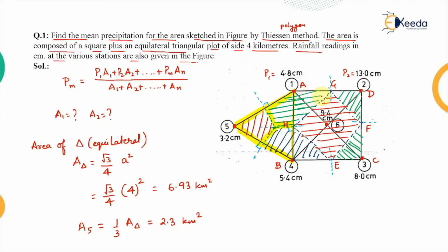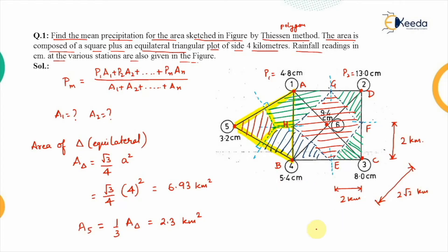For station six, the perpendicular bisector divides the 4-kilometer side of the square into two 2-kilometer halves. The hypotenuse of this right triangle is therefore 2√2 kilometers. The area covered by station six forms a rhombus shape obtained by joining the bisector points of all sides of the square, with dimension 2√2, giving an area of (2√2)² = 8 square kilometers.